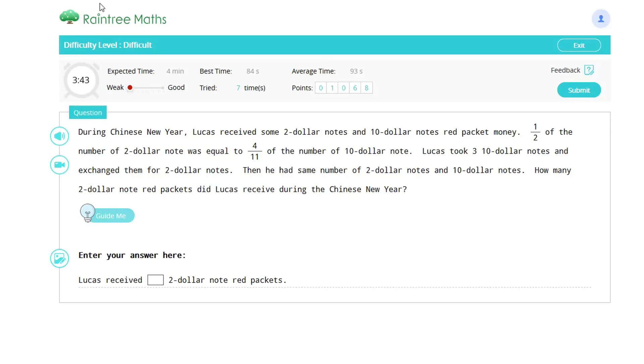Lucas took three $10 notes and exchanged them for $2 notes. Then he had the same number of $2 notes and $10 notes. How many $2 red packets did Lucas receive during the Chinese New Year?